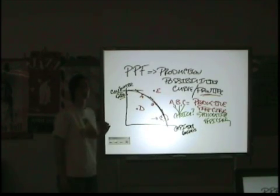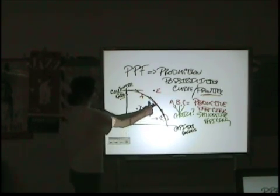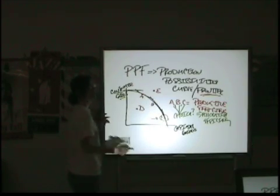Every point on the curve is productively efficient. To be allocatively efficient, you're choosing a point that gives you a particular combination.